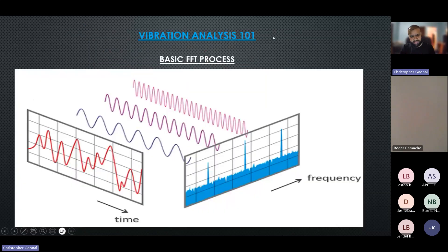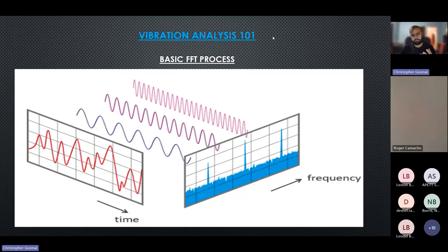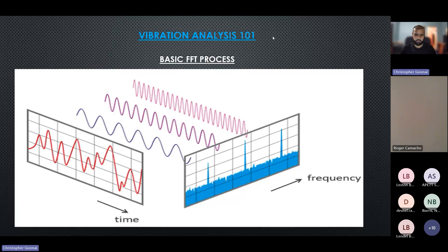Now the vibration analysis 101 — the FFT process. It starts with a complex waveform, and what the FFT algorithm does is extract from that waveform its individual sinusoidal or frequency components. Each waveform may have a separate frequency, and you map those out on a spectrum — a measure of amplitude versus frequency. You can see in the illustration in blue how all the individual frequencies are mapped out, and you use those patterns for vibration analysis to assess the machines.